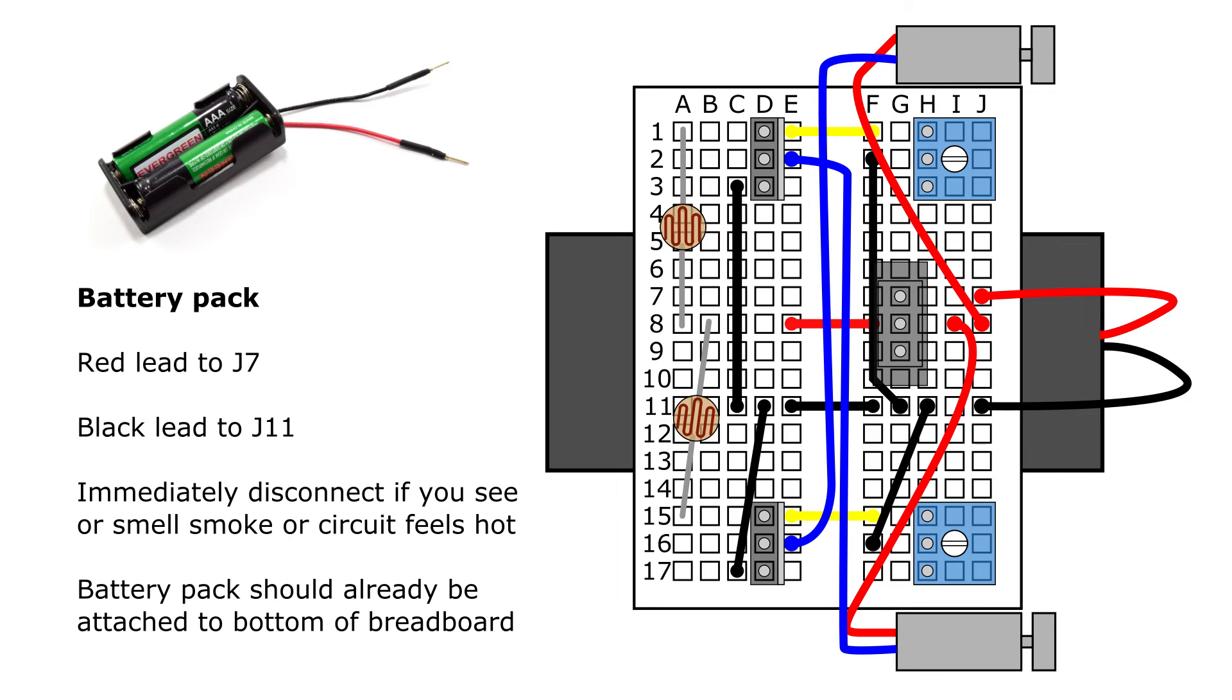Now you're almost done. You're ready to connect the battery pack leads. So remember, you should have already attached the battery pack to the bottom of the breadboard when you built the robot's body. You're going to take the red lead and connect it to hole J7, and the black lead to hole J11. Now if you've connected everything properly and your power switch is in the off position, your robot should be off and nothing should happen. But if you see or smell smoke or any part of the robot feels hot, that means you have a short circuit and something is wired incorrectly somewhere. So you want to immediately disconnect the battery pack leads, hopefully before any components of the circuit have been damaged by getting too hot, and then go back and double check all of your wiring because you have a short circuit somewhere if that happens.